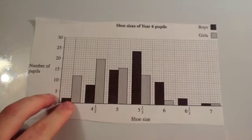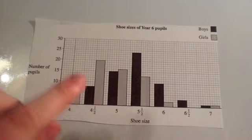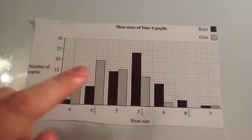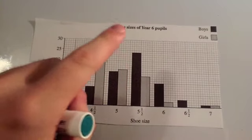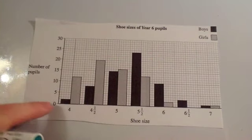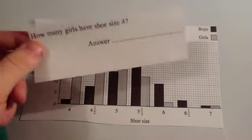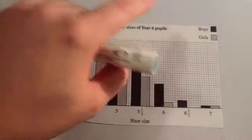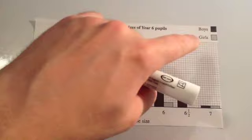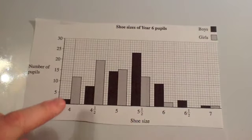We're now going to look at reading bar charts. Here we've got a bar chart showing the shoe size of boys and girls in a particular year group — year six students. It's got frequency up the side and shoe size along the bottom. It's a dual bar chart because it's got boys and girls, so you've got one bar for boys and one bar for girls.